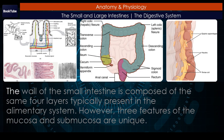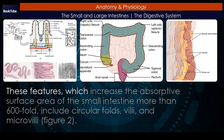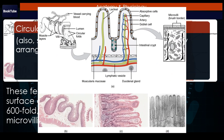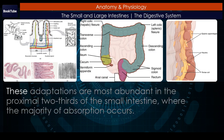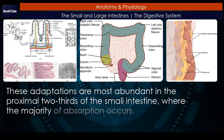Histology. The wall of the small intestine is composed of the same four layers typically present in the alimentary system. However, three features of the mucosa and submucosa are unique. These features — which increase the absorptive surface area of the small intestine more than 600-fold — include circular folds, villi, and microvilli. These adaptations are most abundant in the proximal two-thirds of the small intestine, where the majority of absorption occurs.